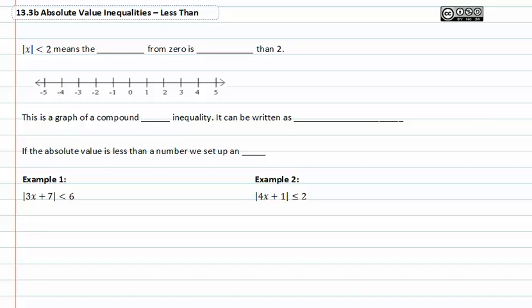In this video, we'll be talking about absolute value inequalities less than. With less than absolute value inequalities, you have to remember that the absolute value means the distance from zero, but that the distance from zero is less than two.